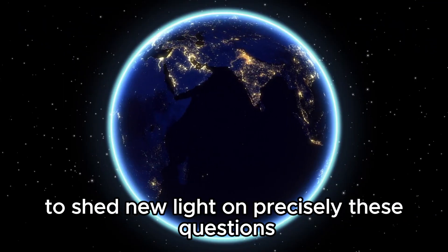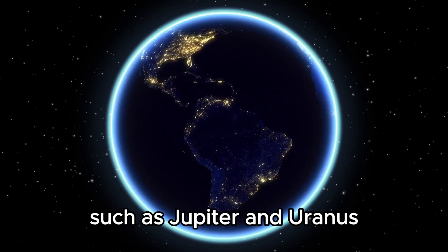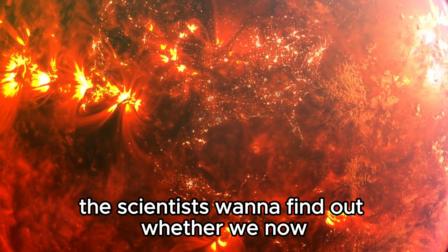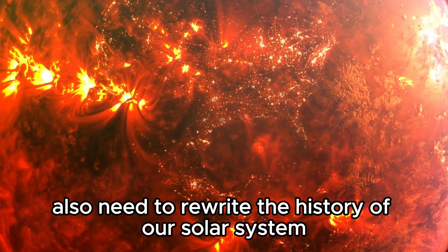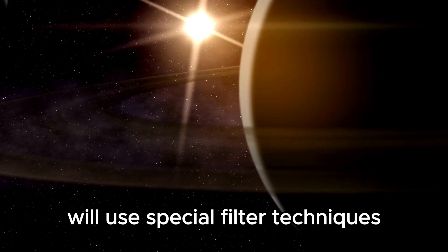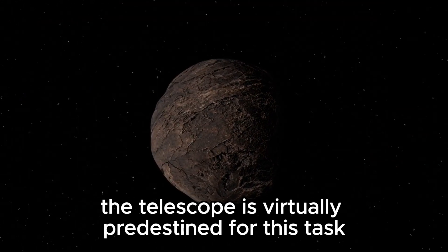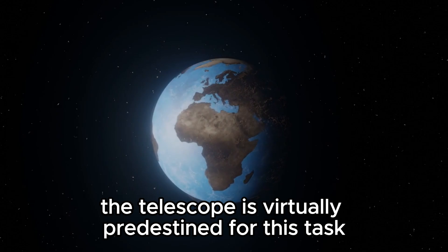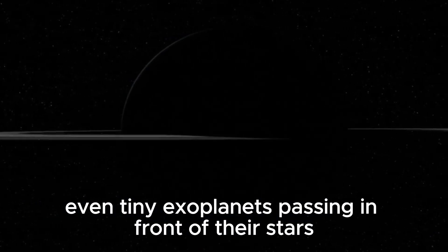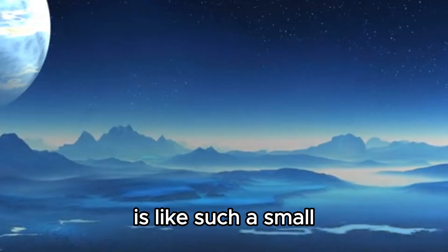James Webb is now to shed new light on precisely these questions. Thanks to the study of planets such as Jupiter and Uranus, we already have completely new impressions of the gas and ice giants. The scientists want to find out whether we now also need to rewrite the history of our solar system when Webb sets its sights on Mercury. The new space telescope will use special filter techniques that will allow it to scan Mercury around the sun. The telescope is virtually predestined for this task.